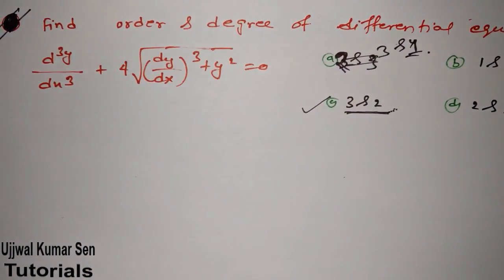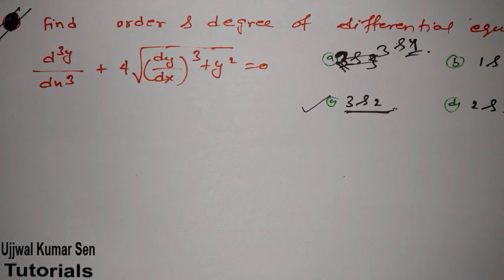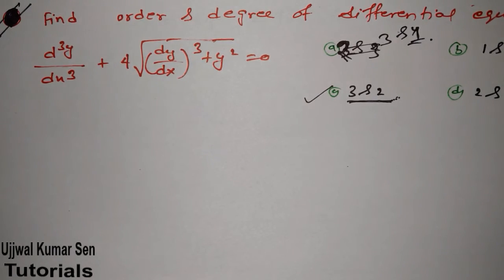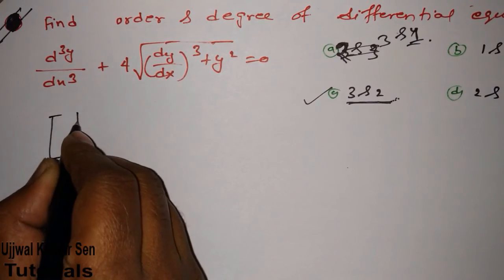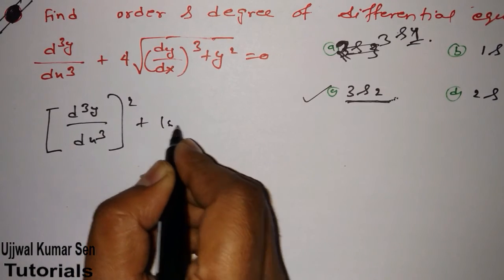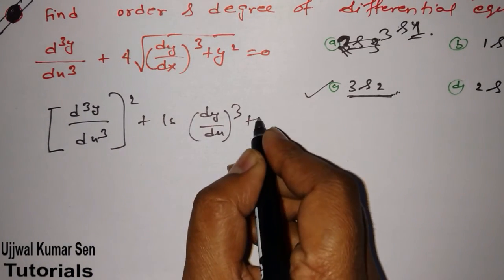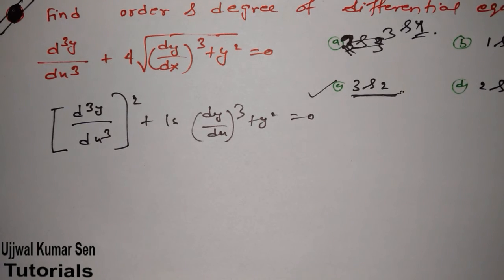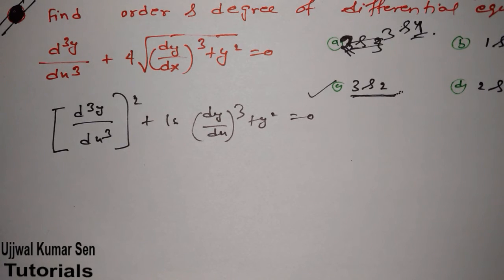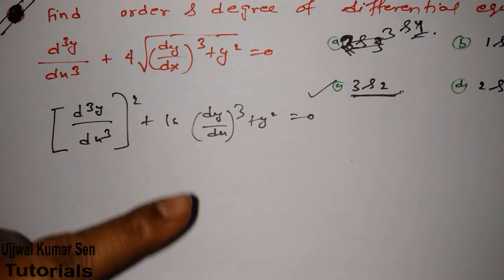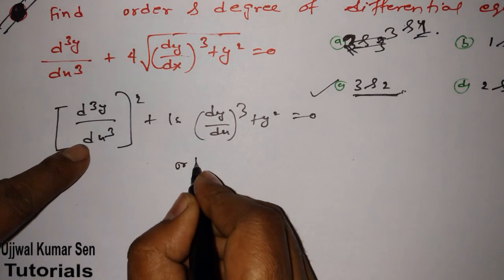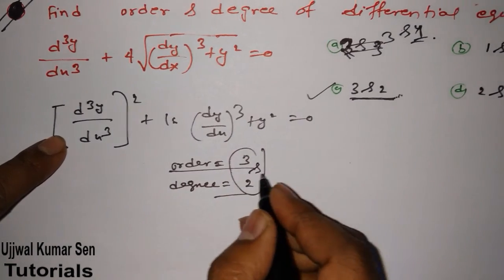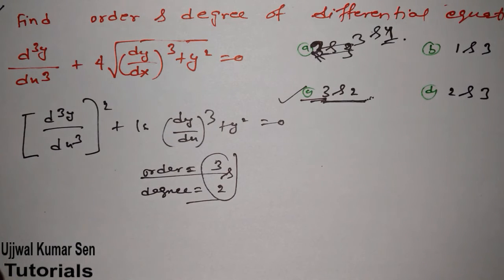The rule is: you cannot find order and degree with a root present in the equation — you must remove the root first. To remove the root, square both sides. After squaring, we get: 16(dy/dx)³ + y² = 0. Now we can find order and degree. The maximum order is three and its degree — the power of that derivative — is two. Therefore order = 3 and degree = 2, so option C is the right answer.